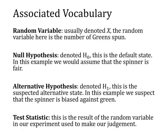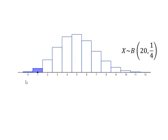So four bits of vocabulary there. Here I've got a graph that shows our random variable. Hopefully you're happy that our random variable in this example is going to be binomial — the spinner might be green or it might not be. Assuming it is fair, the probability of getting green is a quarter and we're spinning it 20 times, so our random variable takes a Binomial distribution with n=20 and p=1/4. The graph shows the probability of getting different values of X, and we can see that the probability of getting five greens is the highest — which makes sense, because we said we would expect five greens if it was fair.